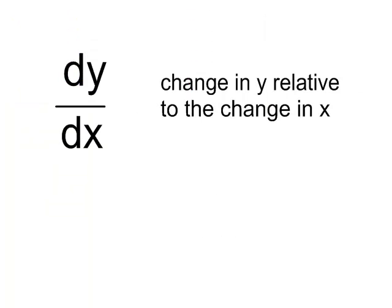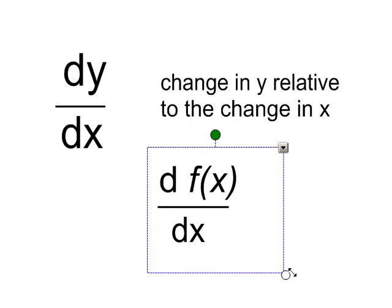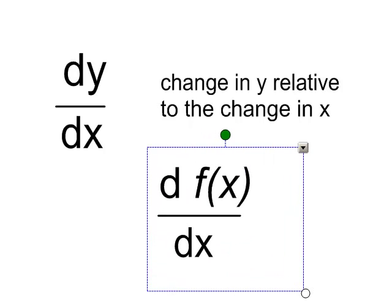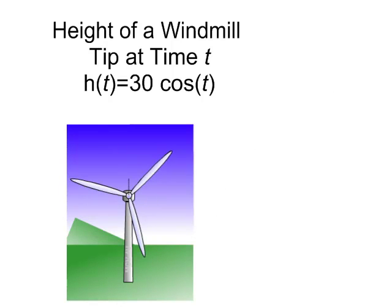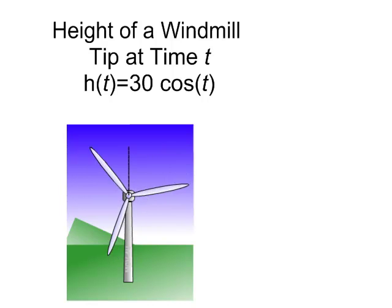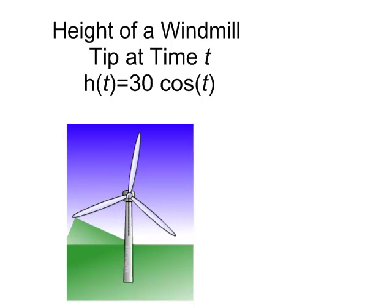Another way the Leibniz notation gets expressed is the change in the overall value of the function with respect to x, or the change in the rate of change of the function as x changes. So there's a moderate change in the next activity, actually. You're going to be examining the height of a windmill tip at time t. And there's an example relationship of how the height and the time are related to each other.